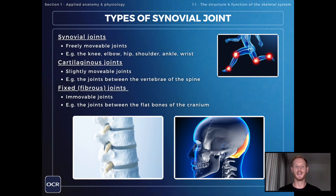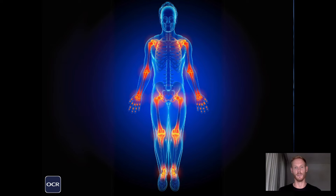So a synovial joint is a freely movable joint. We're talking about the knee, elbow, hip, shoulder, ankle, wrist, and the joints between the fingers and toes.